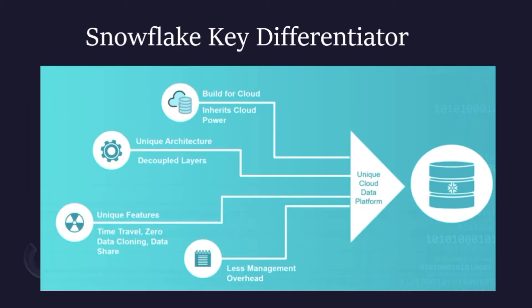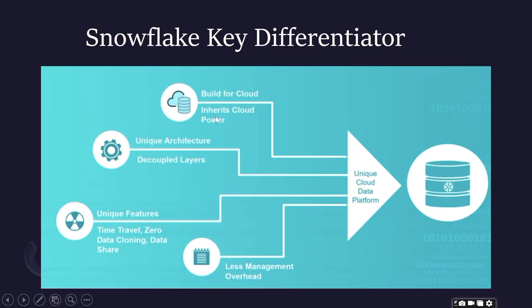Let's understand some key differentiators of Snowflake. First, it is built for the cloud and inherits cloud power — it allows loading data from Amazon S3, Azure, or GCP. Second, Snowflake has a unique architecture. There are two types of architecture: shared-nothing architecture and shared architecture where clusters are shared. We will cover architecture in detail in the next video.